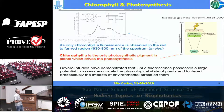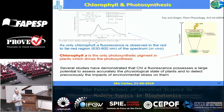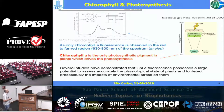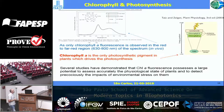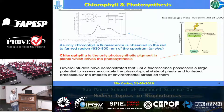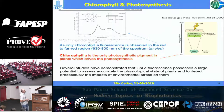So we have two important pieces of information: first, only chlorophyll A is observed in the red-infrared region of the spectrum; second, only chlorophyll A is the pigment that drives photosynthesis. Therefore, if I can measure the chlorophyll fluorescence correctly, I can use it to evaluate the photosynthesis process.